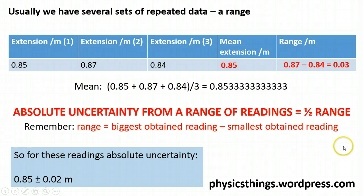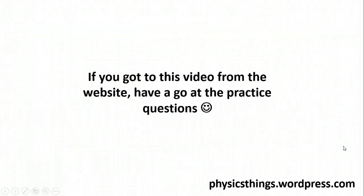So that's a summary of absolute uncertainty. If you got to this video from the website Space Engineers—this particularly is aimed at you—then go back and now have a go at the practice questions. And then, at the end of the four exercises, you can have a go at the summary questions.